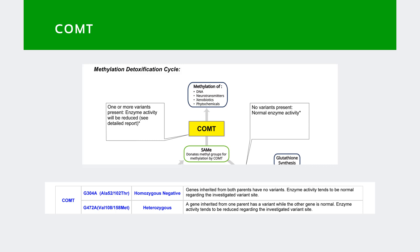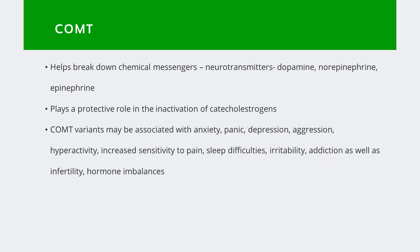Page two shows which version of the gene was tested and what the patient inherited. This patient was heterozygous positive for the VAL-108158 MET. The COMT gene provides instructions for making an enzyme called catechol-O-methyltransferase. In the brain, COMT helps break down chemical messengers — neurotransmitters dopamine, norepinephrine, and epinephrine. COMT is particularly important in the prefrontal cortex, which organizes and coordinates information from other parts of the brain.